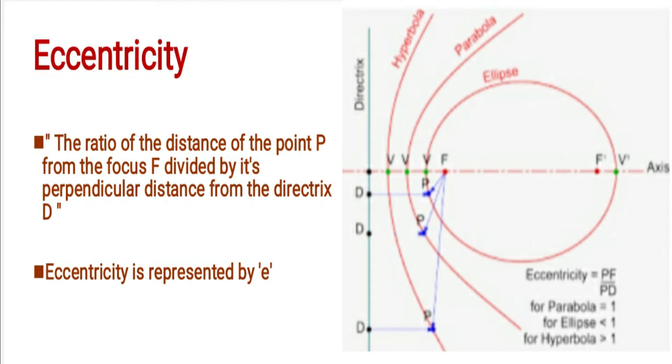Point P is marked on the ellipse, parabola, and hyperbola. Each has vertices and directrix marked. In the case of ellipse, there are two focuses—that is F and F'—and two vertices—that is V and V'.